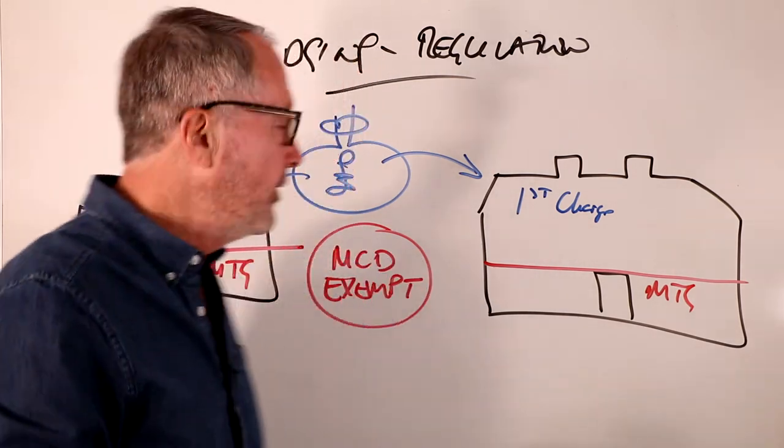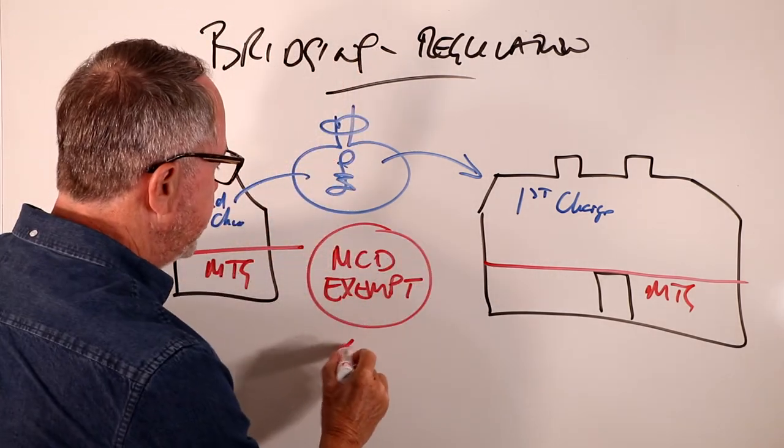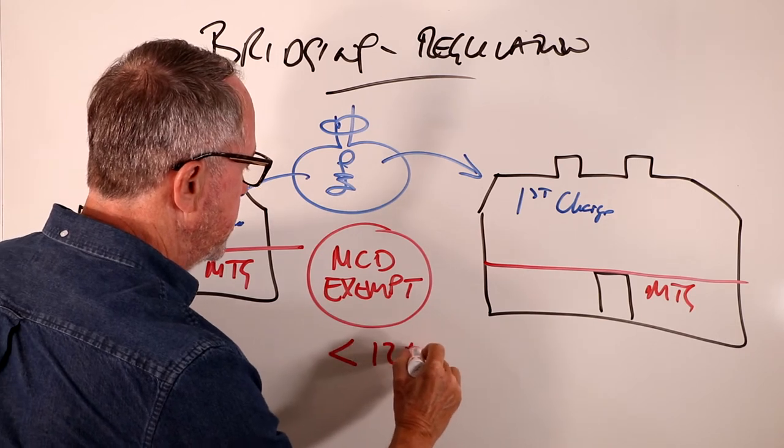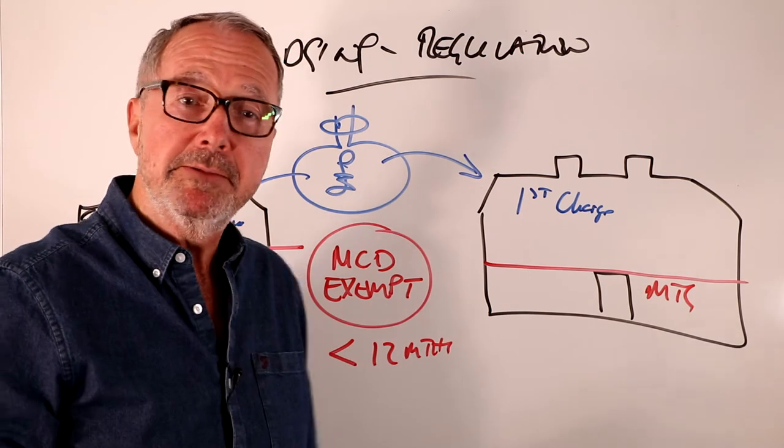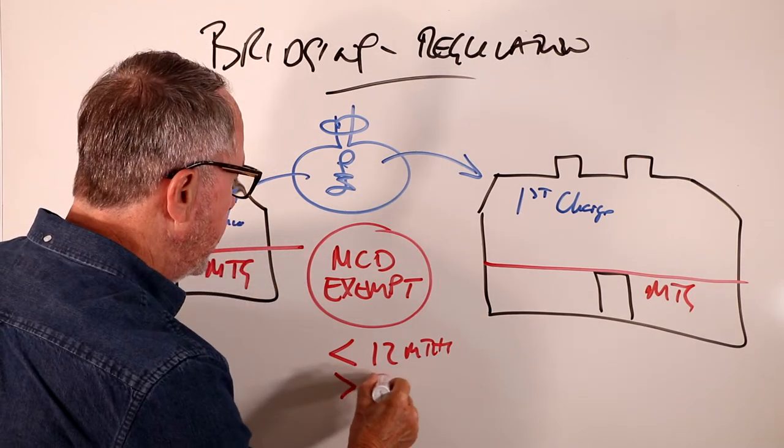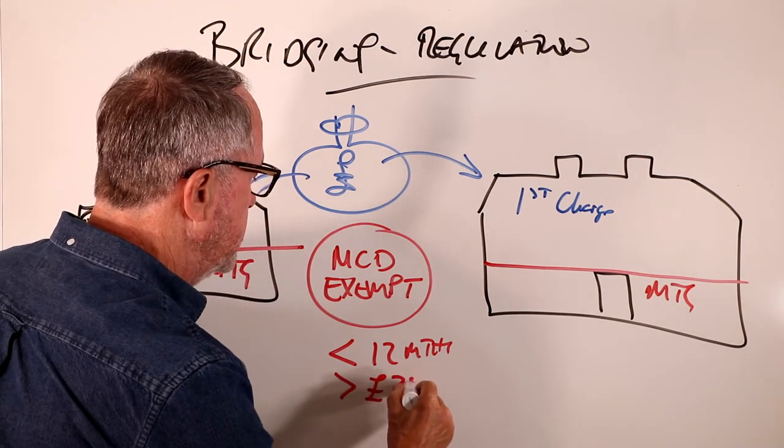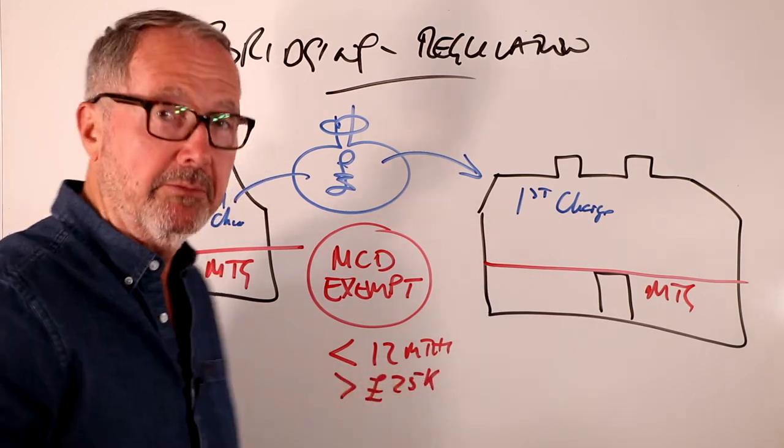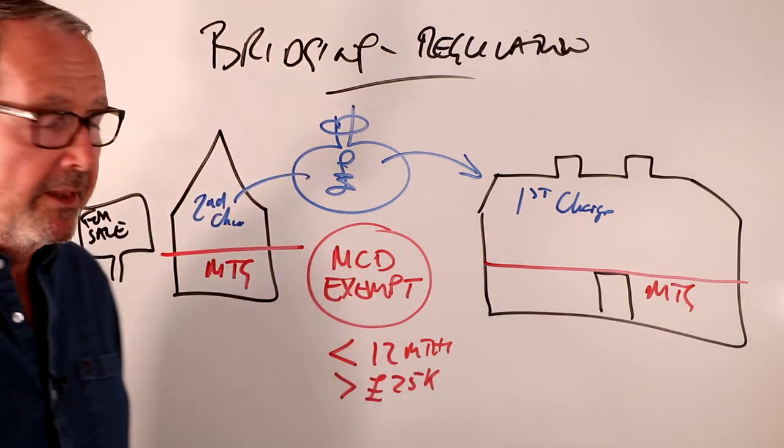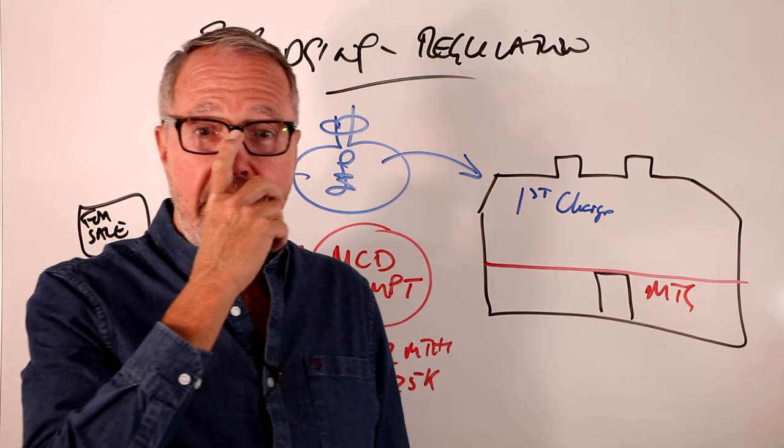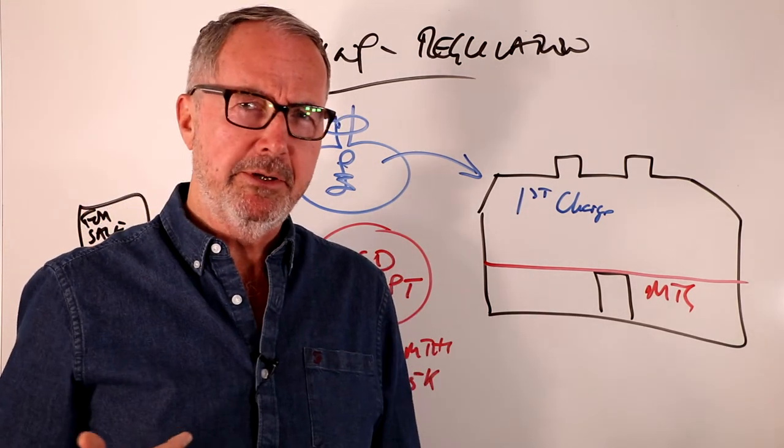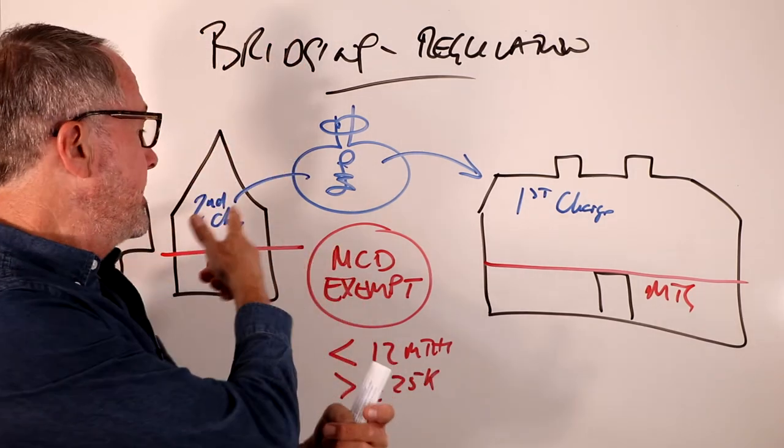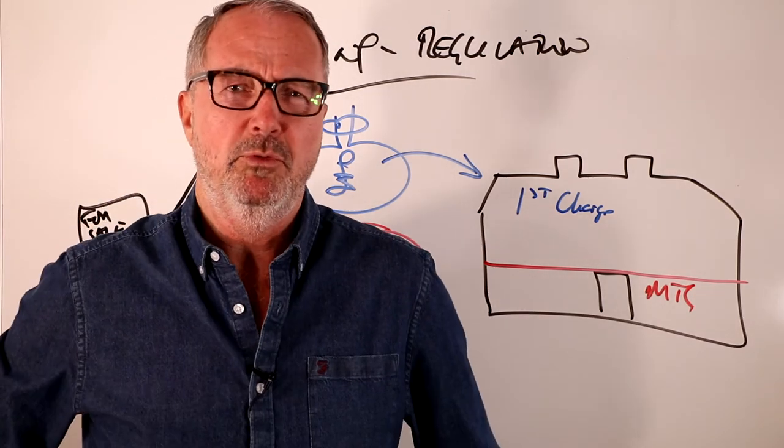Now that is predominantly for bridging finance that is for less than 12 months. In other words, they want it repaid within a 12-month period. And it's for more than 25 grand, which is absolutely not a problem, the minimum figure there. And that makes it MCD exempt. And it also needs to be second charge, less than four payments, but that's a small point really.